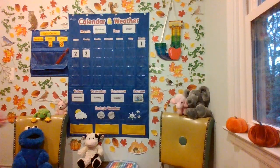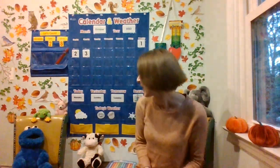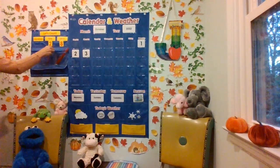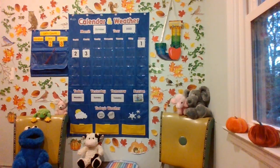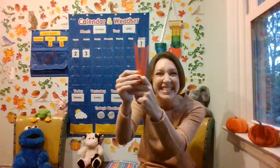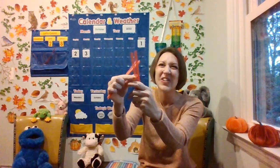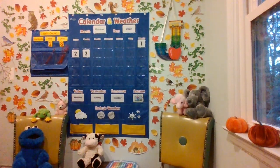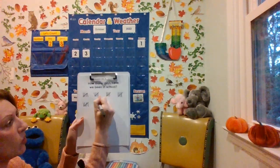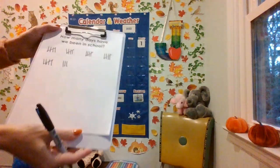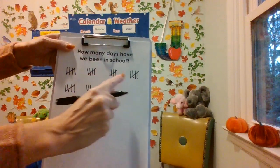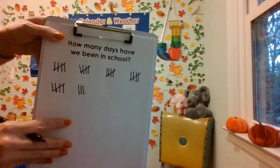Start with our two tens. How many tens? Two tens. Skip count by tens two times: 10, 20. Keep the 20 in your brain. Now let's get the eight ones and count on: 21, 22, 23, 24, 25, 26, 27, 28. Put the eight ones back in the ones pocket and pull straight down for our tally mark. Let's skip count by fives five times and put the three ones with it: 5, 10, 15, 20, 25, 26, 27, 28. Fantastic — we've been in school 28 days.